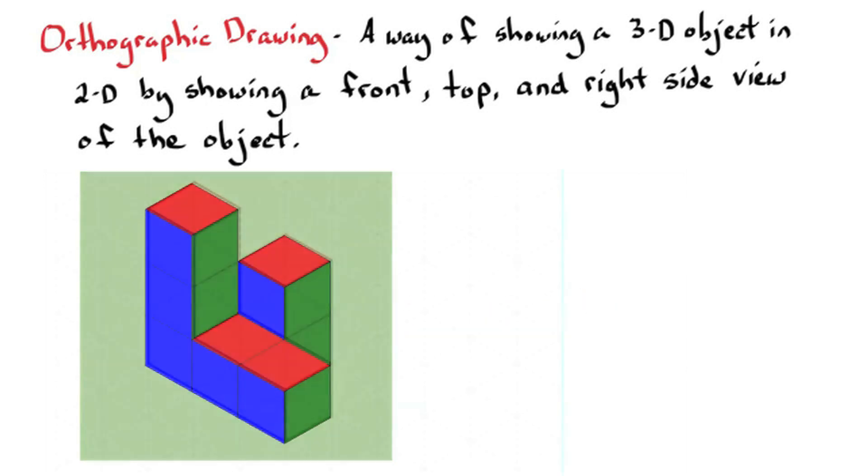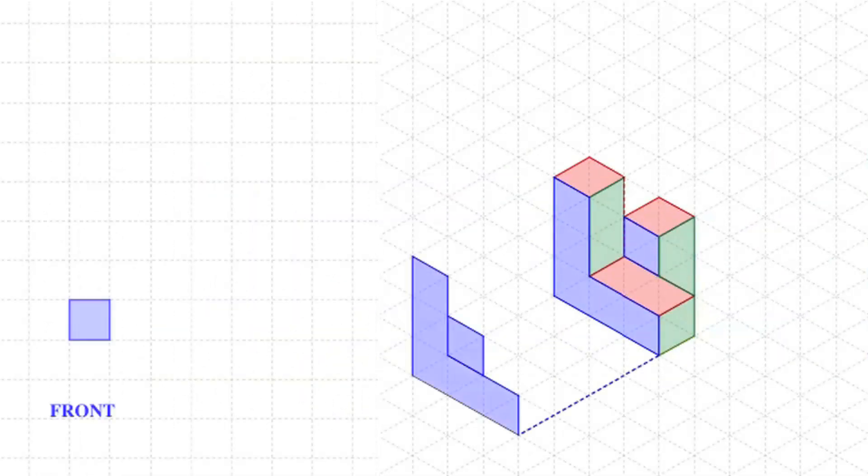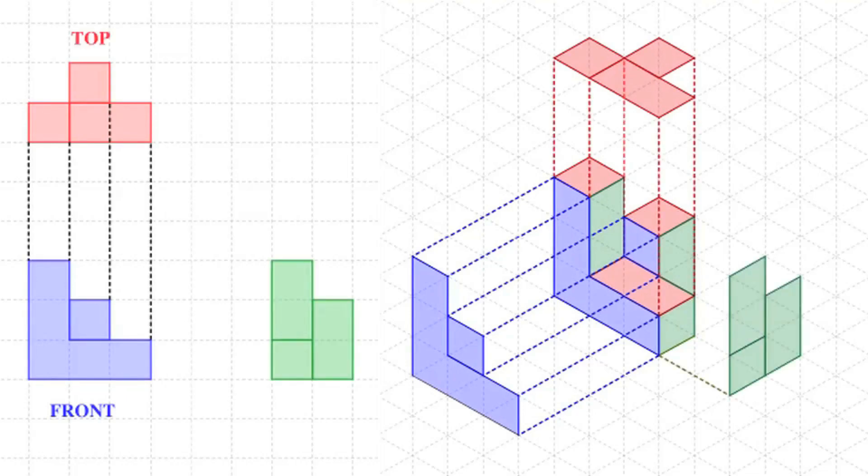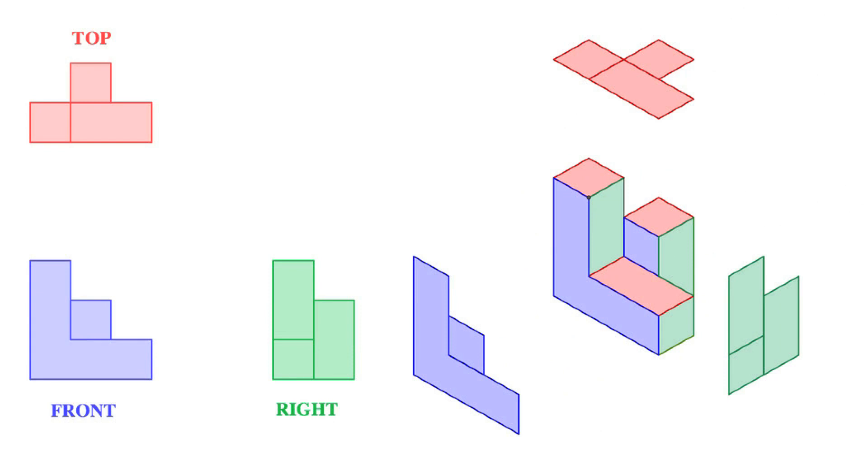So I'm going to take this view and explode it so you can see the front side in blue, the top side in red, and the right side in green. The left is the orthographic drawing, and the right side is the isometric drawing with an exploded view of the sides. And again, you're trying to find the edges and figure out what shapes you can pick out from each view.